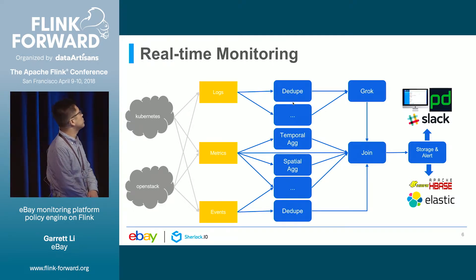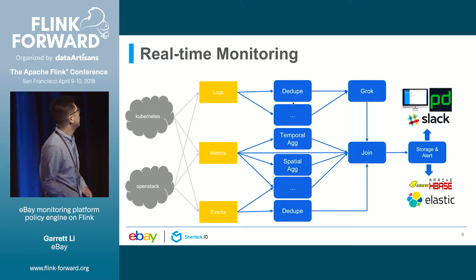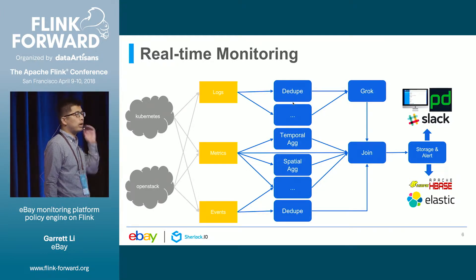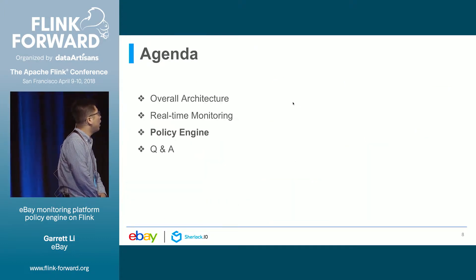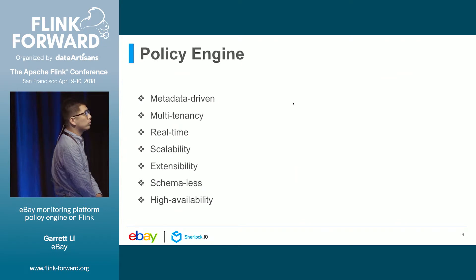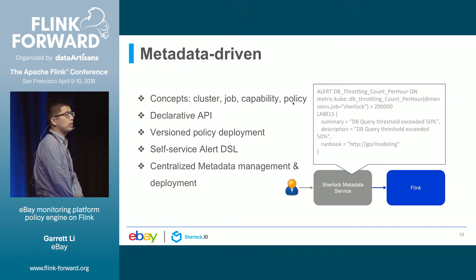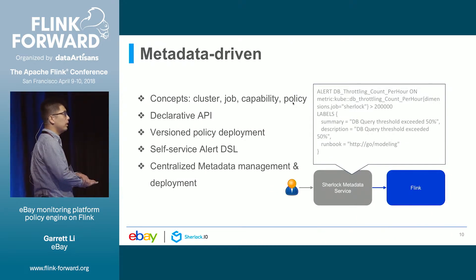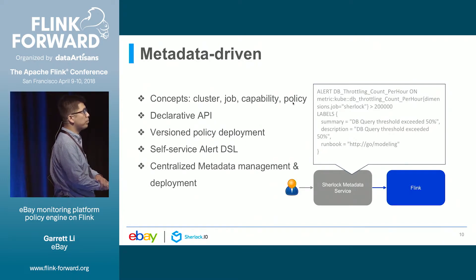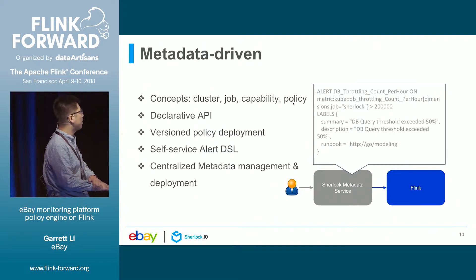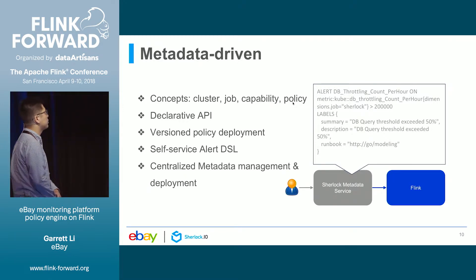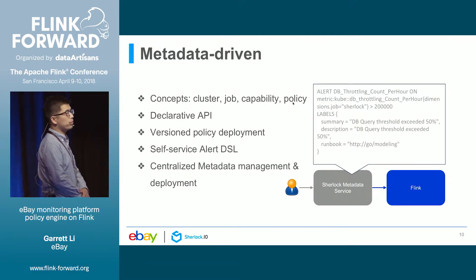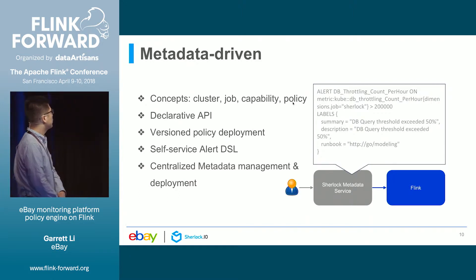To elaborate the policy engine, let's go through its key characteristics. First, it is metadata-driven. In our policy engine metadata service, we have four concepts: cluster, job, capability, and policy. Cluster and job are intuitive — they represent Flink clusters and Flink jobs. Capability is the pre-processing pipeline we define based on our capability framework. And the policy represents the user's pre-processing and alerting request, defined using declarative APIs.